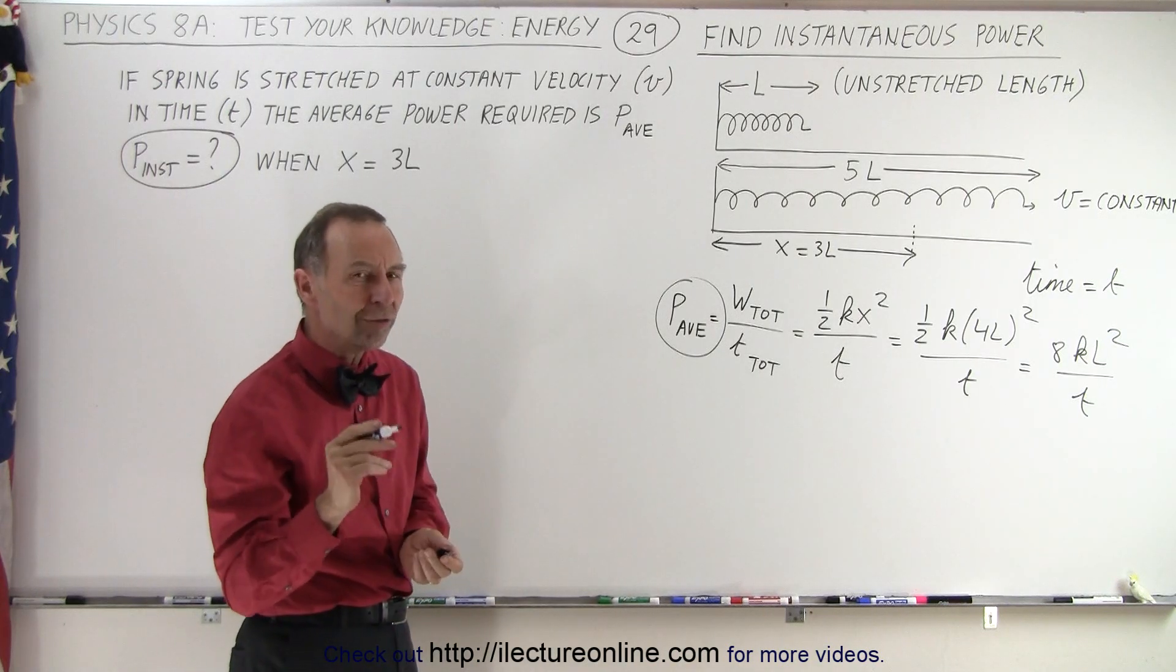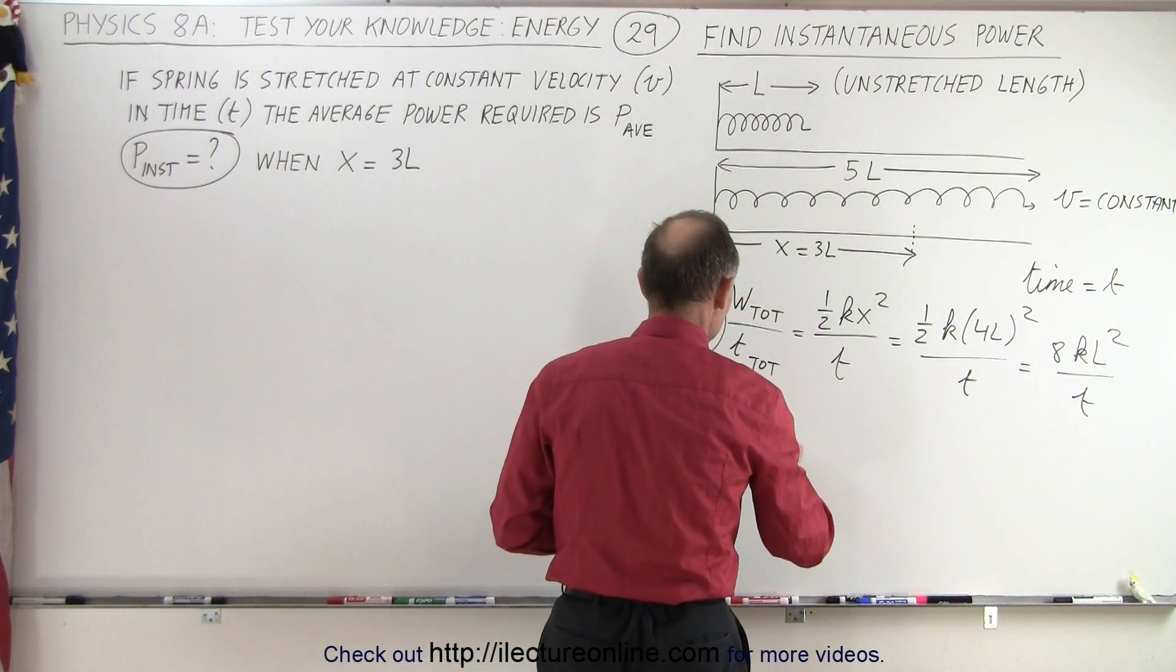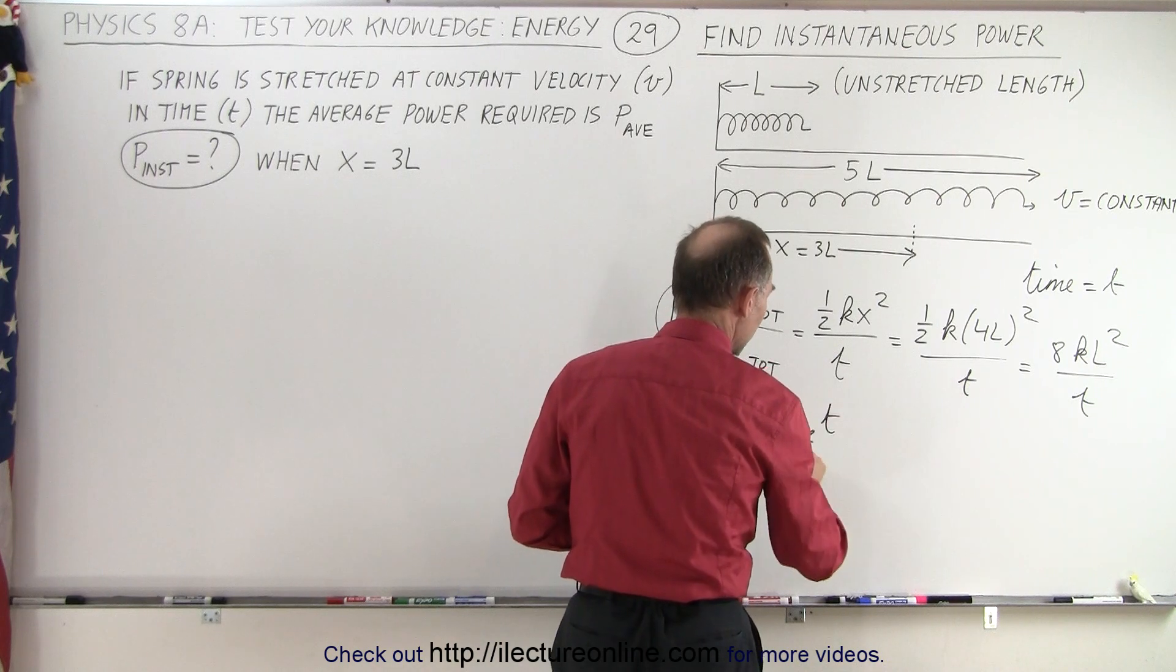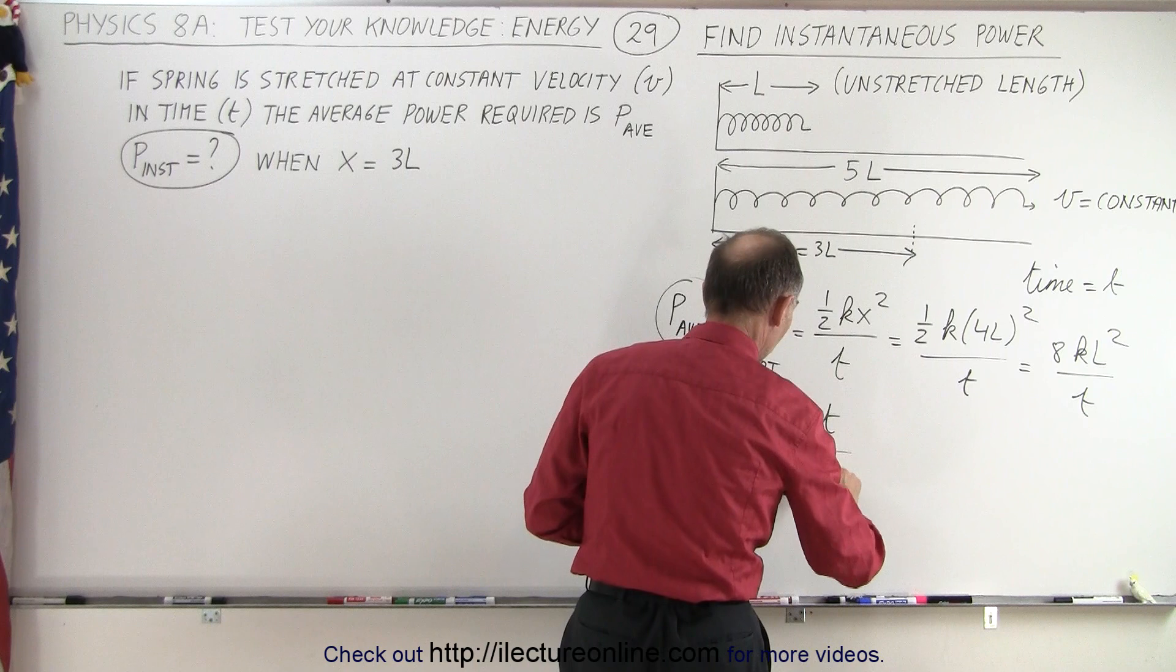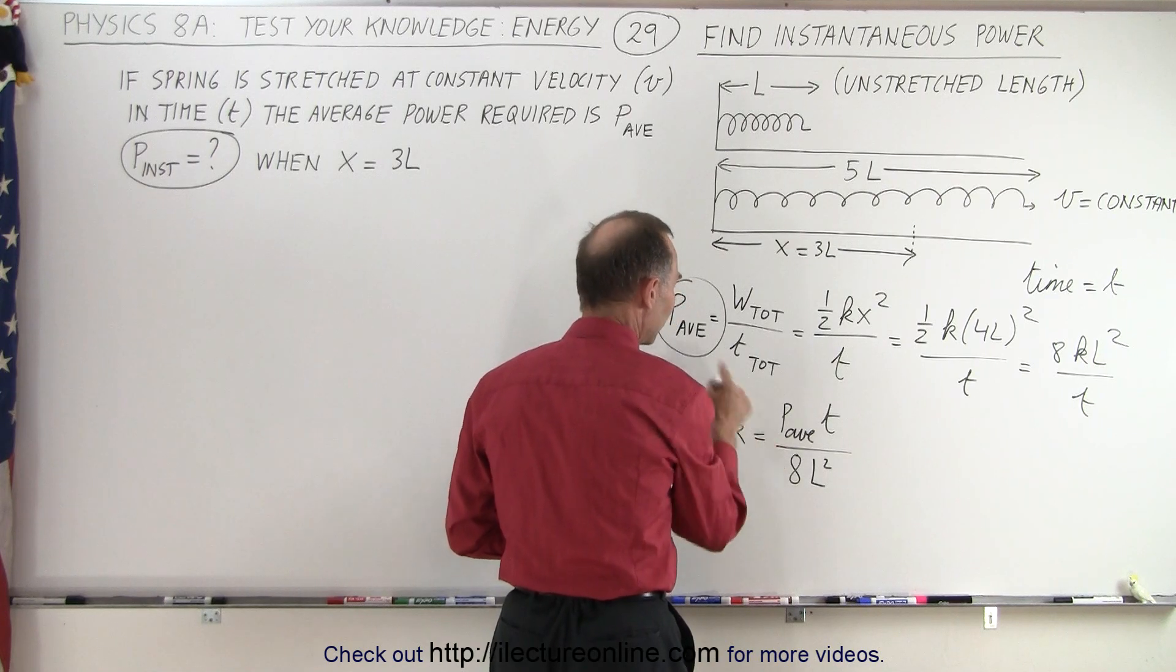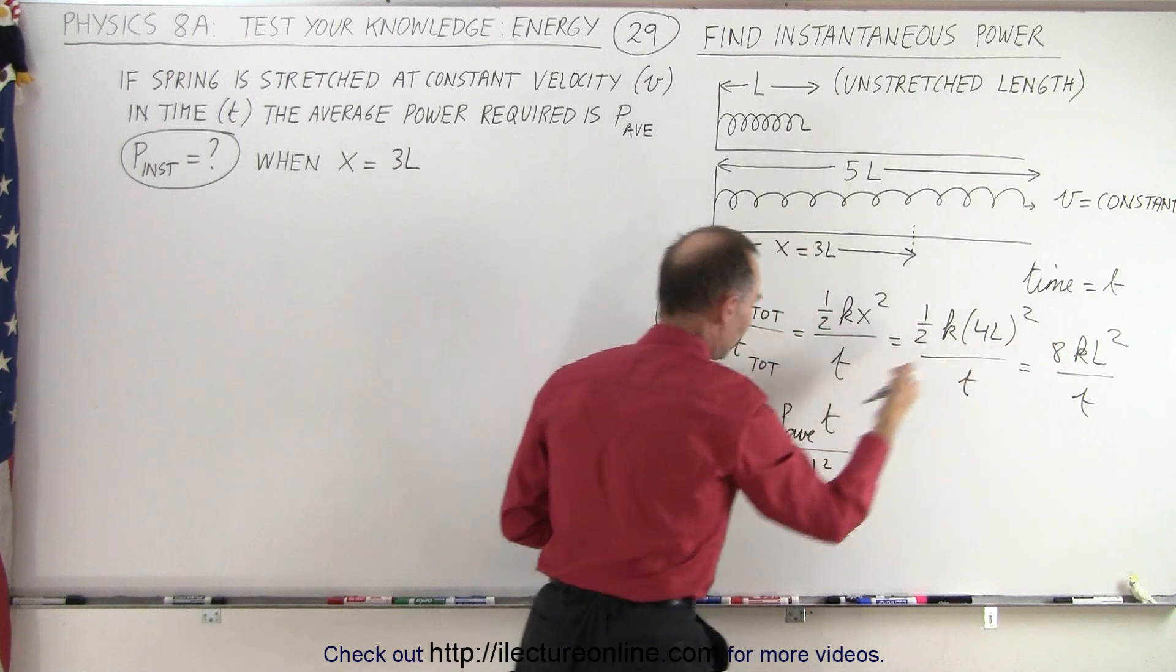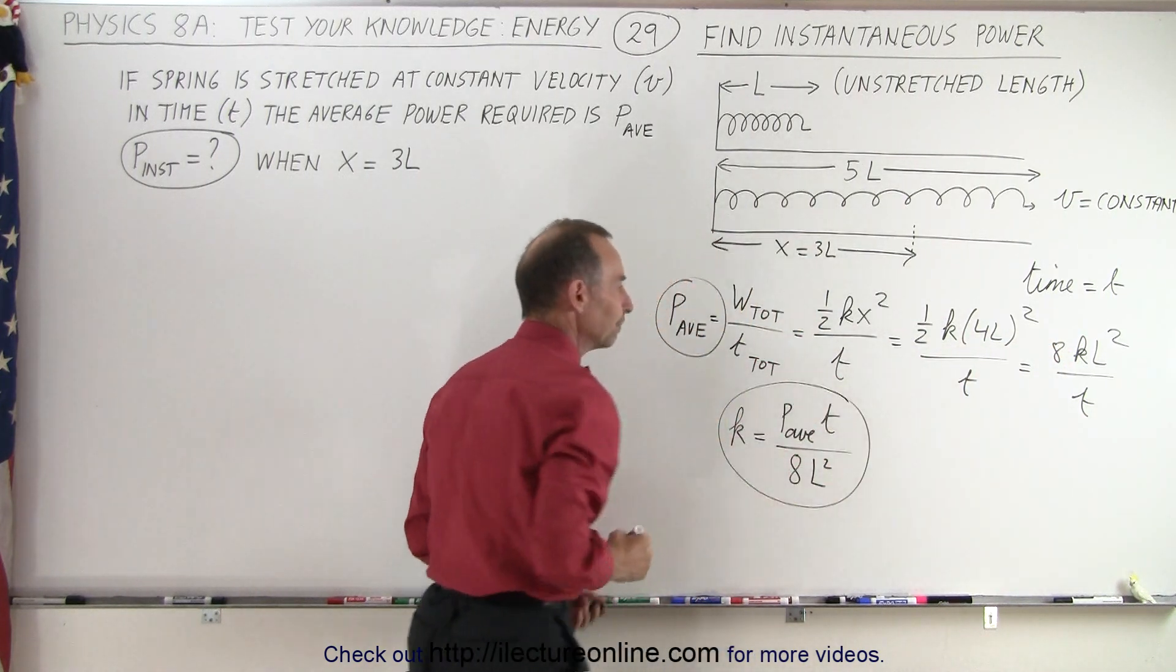Now let's solve for K. So then we can say that K is equal to the average power times T divided by 8L squared. So I bring the 8L squared down and the T up, I have K equals power average times T, when we bring the T over here, and divide both sides by 8 and L squared. So now I also have an expression for K.